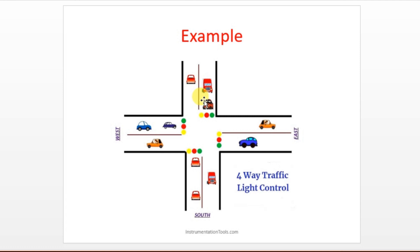So we can take feedback from the field to get the desired output — that is the requirement and need for automation. When output doesn't matter much, open loop is fine. But when you need the desired output, you go for the closed loop control system. I hope you have understood the basics of control systems and their types. I will meet you in the next session. If you liked this video, please like and subscribe our channel — thank you.